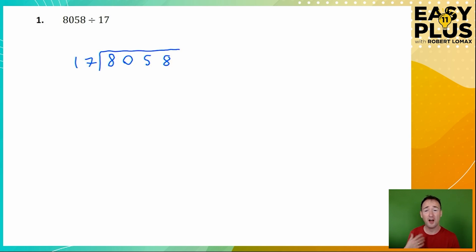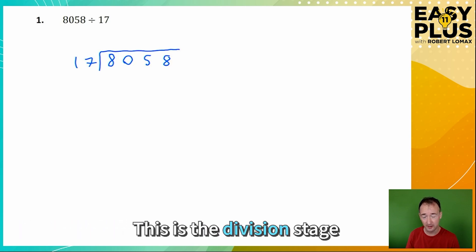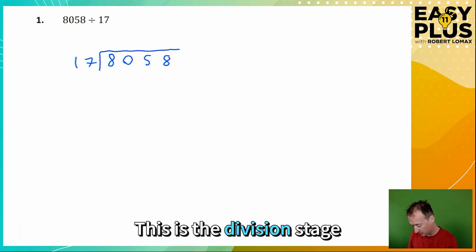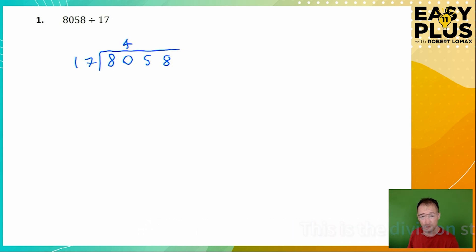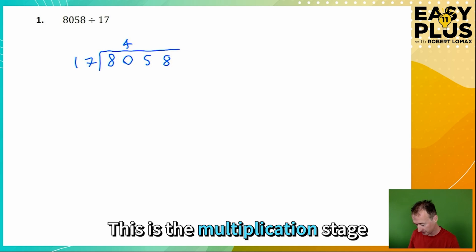We know that two 17s are 34, and this means that four 17s must be 68. Can we fit one more 17 in? 68 plus 7 is 75, and another 10 is 85. No we can't. So there must be four 17s in 80. So we write the 4 above the 0 here, in other words above the last digit of 80. And now we say, what's 4 times 17? And we know that already because we just worked it out.